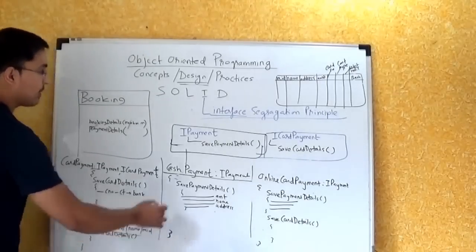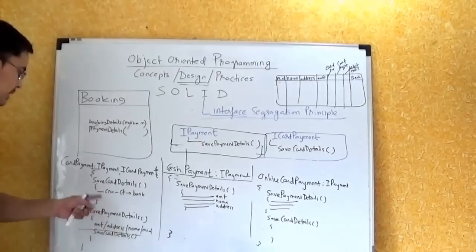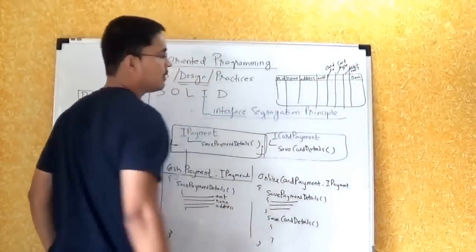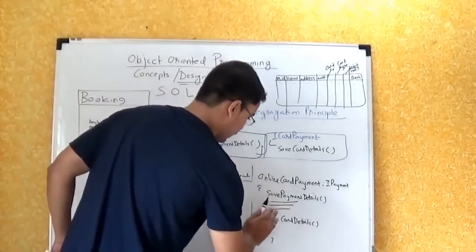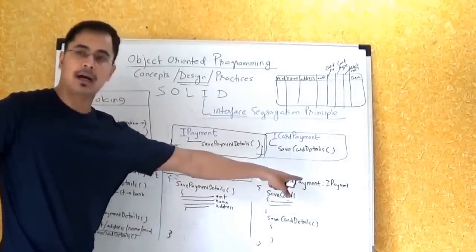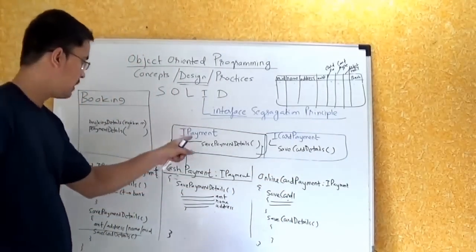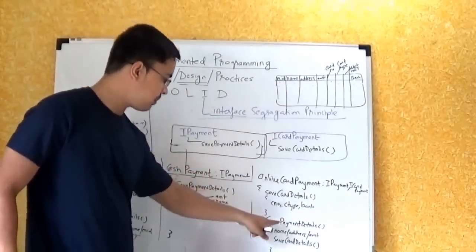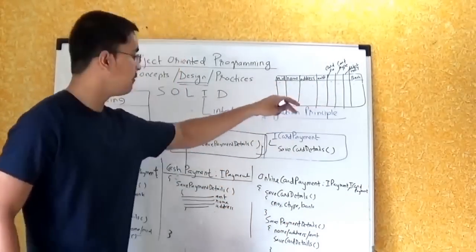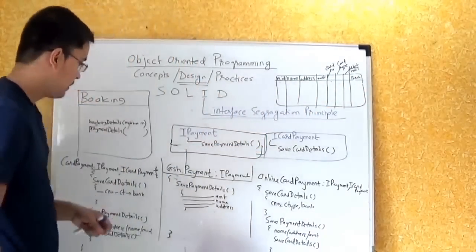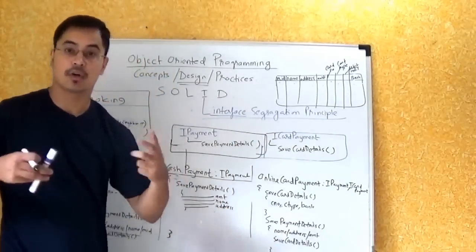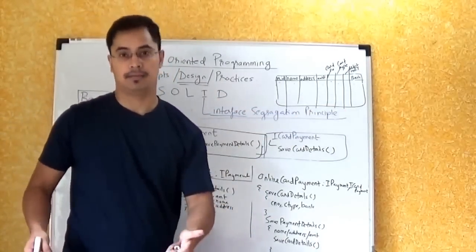For card payment we store Amount, Address, Name, and MemberID; and additionally Card Number, Card Type, and Bank details. Similarly, OnlineCardPayment also implements both IPayment and ICardPayment, so it can save normal payment details and card details. Now CashPayment doesn't have to implement ICardPayment because it does not need to — so we are following the Interface Segregation Principle.